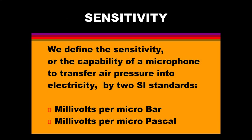The sensitivity of a microphone is its capability to transfer air pressure into electricity, and it's defined by two SI standards: millivolts per microbar, and millivolts per micropascal. The microphone is converting pressure changes, so we're looking at pressures being converted to millivolts, and the two pressure standards are the microbar and the micropascal.